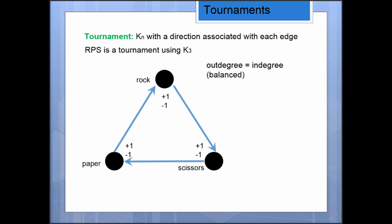So plus one and minus one if you want to think of plus one as beating and minus one as losing. And we say that this is in-degree equal to out-degree. So out-degree is the number of edges going out of a vertex, and in-degree is the number of edges going into a vertex.